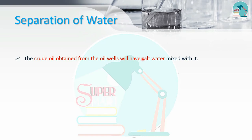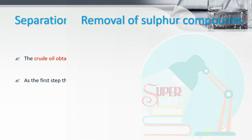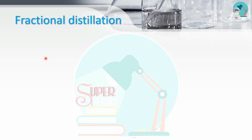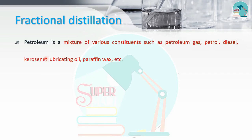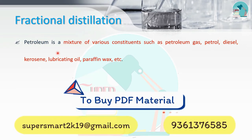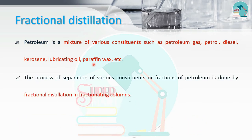Crude oil is a mixture containing salt water. First, we remove the water, then we remove the sulfur content, as crude oil has harmful sulfur components. We also remove other impurities. The method used is fractional distillation, which is used to separate petroleum into useful products like petrol, diesel, kerosene, lubricating oil, paraffin wax, and others.